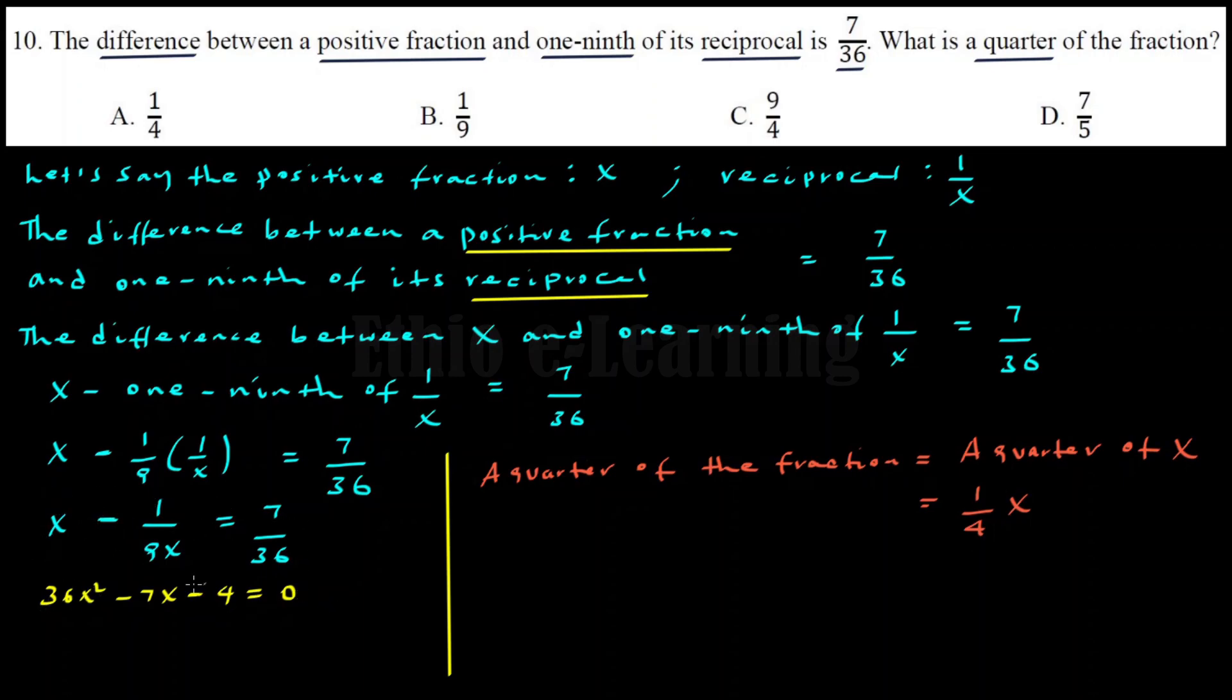This is now a quadratic equation in the form ax squared plus bx plus c equals 0. The solution is x equals negative b plus or minus the square root of b squared minus 4ac, all over 2a.